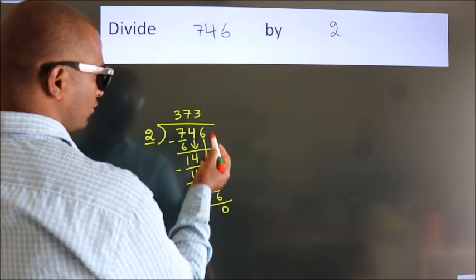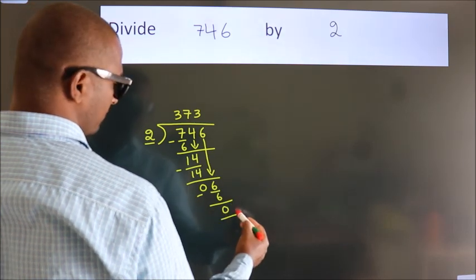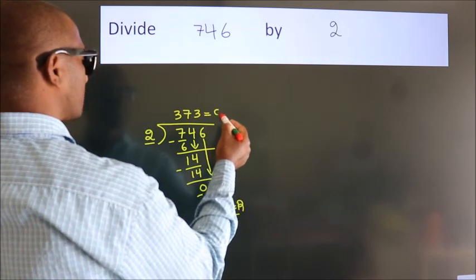After this, no more numbers to bring it down. So we stop here. This is our remainder. This is our quotient.